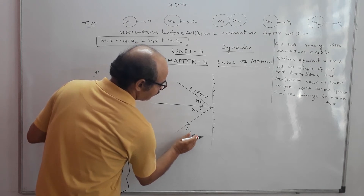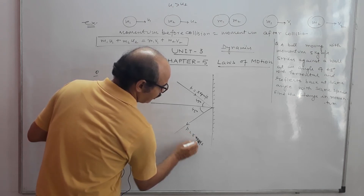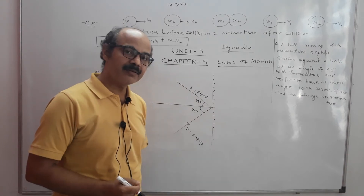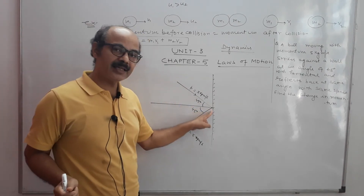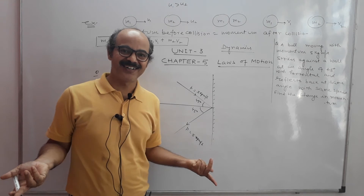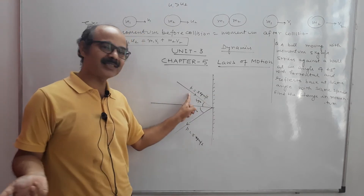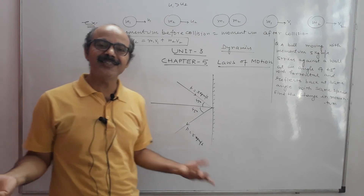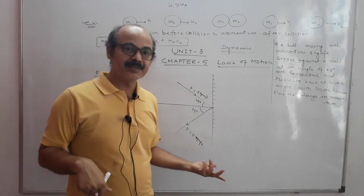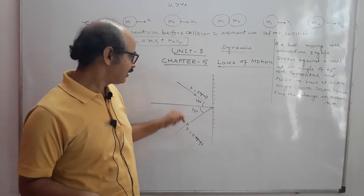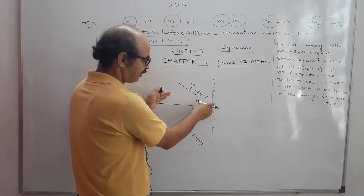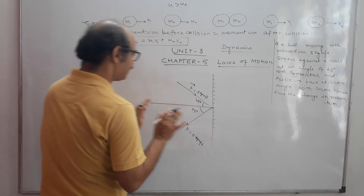We are asked to find the change in momentum. You might think the answer is zero since initial and final magnitudes are both 5 kg·m/s — but no, it is not zero. This is not a scalar quantity; we cannot add it algebraically because momentum is a vector. Its direction is 45 degrees with horizontal going in, and different going out, so we cannot find the change that simply.